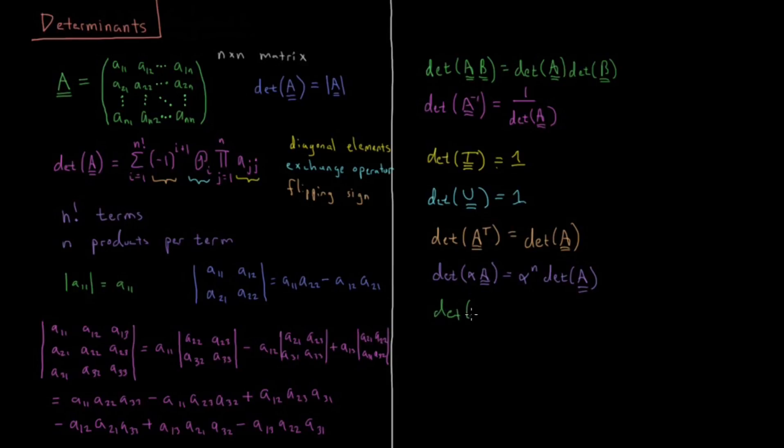The determinant of some diagonal matrix is equal to the product from i equals 1 to n. It's the product of all the diagonal elements of that matrix. So straightforward when all the zeros cancel out and do get rid of all the work for you there.